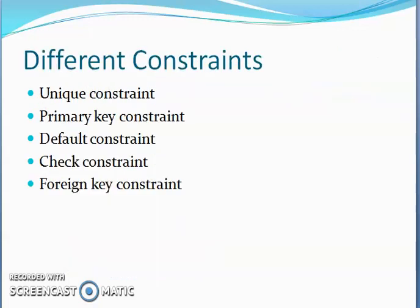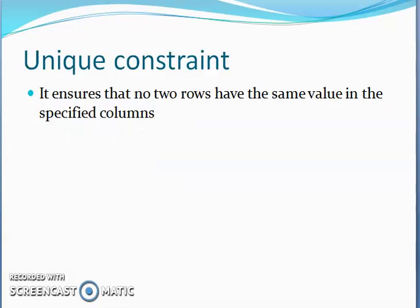Next, what are the different types of constraints? The first one is unique constraint, primary key constraint, default constraint, check constraint, and foreign key constraint. Unique constraint ensures that no two rows have the same value in the specified column. For example, unique constraint applied on E code of the employee table ensures that no rows have the same E code value in that table.